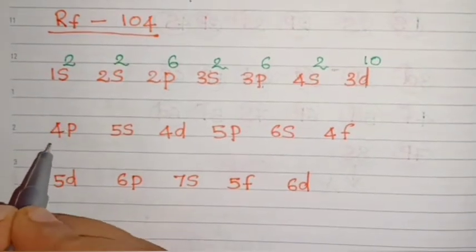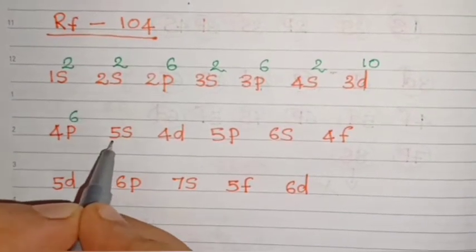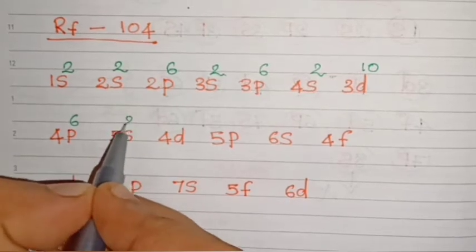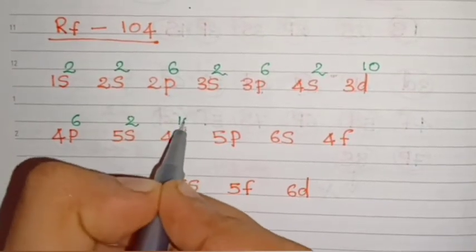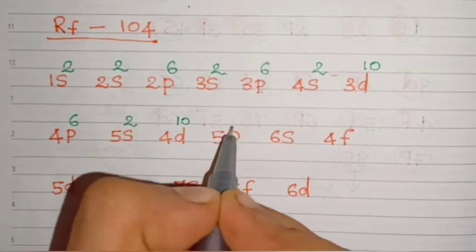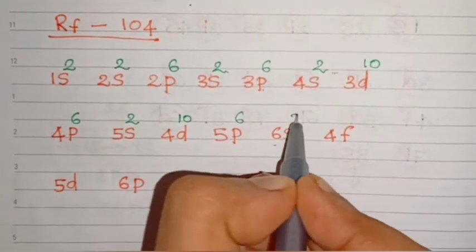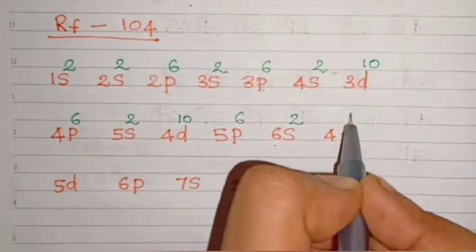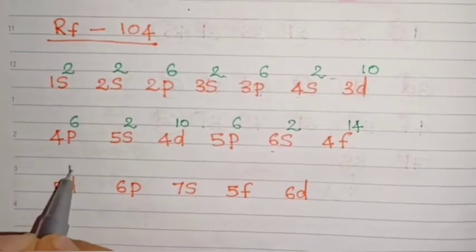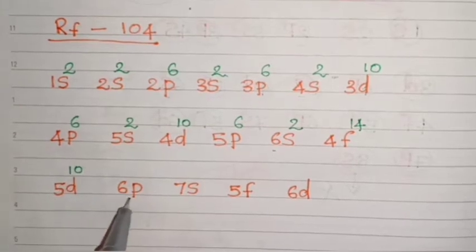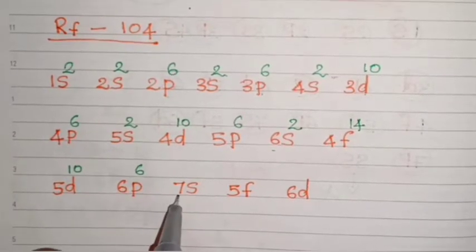We know d can hold 10 electrons. Then 4p — whatever 2p, 3p, or 4p, the capacity of p is 6. So 4p6. Then 4d10. Then 5p6. We will write this in the order of atomic orbitals. Before writing this, you must be thorough with the order of orbitals — then only you can write it very smoothly and quickly.